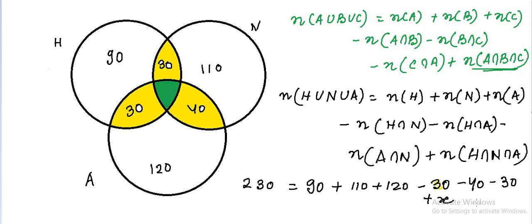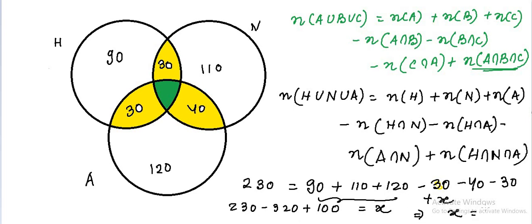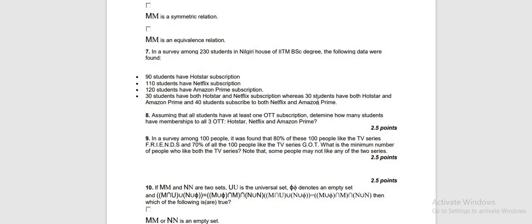Simplifying this: 90 plus 110 plus 120 gives 320, then 320 minus 30 minus 40 minus 30 gives 220. So 230 equals 220 plus x, which means x equals 10. So there are 10 students who have subscribed to all three services. The answer for this question is 10.